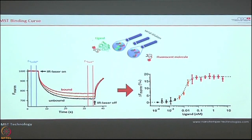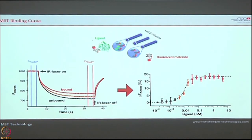Once you determine all 16 thermophoretic curves for all different ligand concentrations, you go to the dose-response fit curve. There is a baseline where typically there is no binding, and a saturation point. The midpoint is the KD — the binding affinity — where your molecules are half bound and half unbound. By extracting the data from the thermophoresis curve and fitting the dose-response curve, you get a KD value.